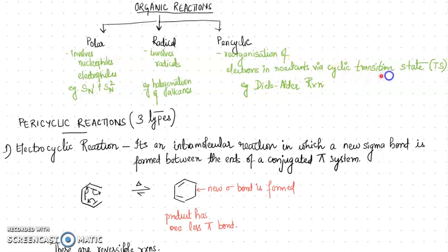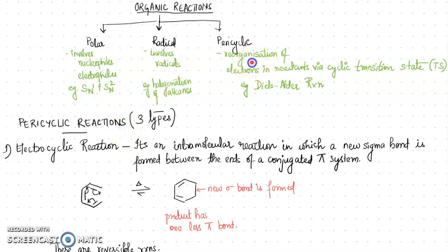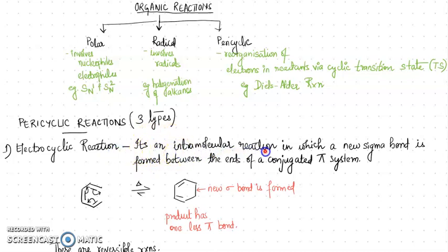Pericyclic reactions include those reactions where there occurs a reorganization of electrons in the reactant via a cyclic transition state, leading to the formation of the requisite product. The Diels-Alder reaction, which you have learned previously, is one reaction that comes under the category of pericyclic reactions. Now let's look into the different types of pericyclic reactions — we have three different types, and the first is referred to as the electrocyclic reaction.